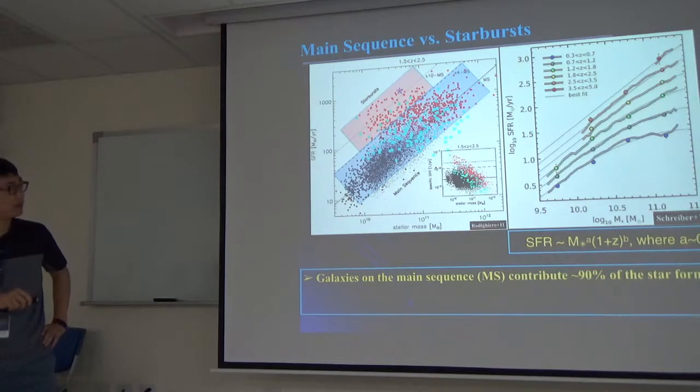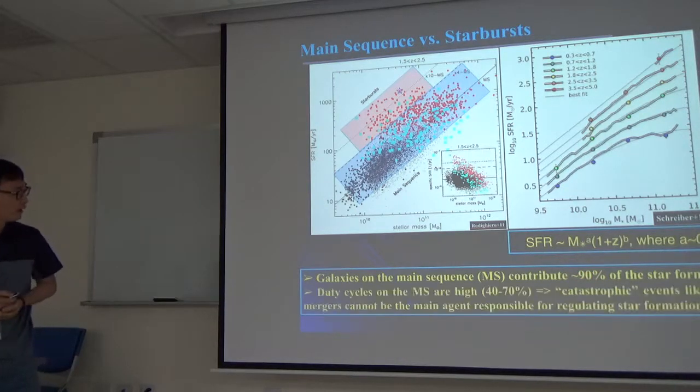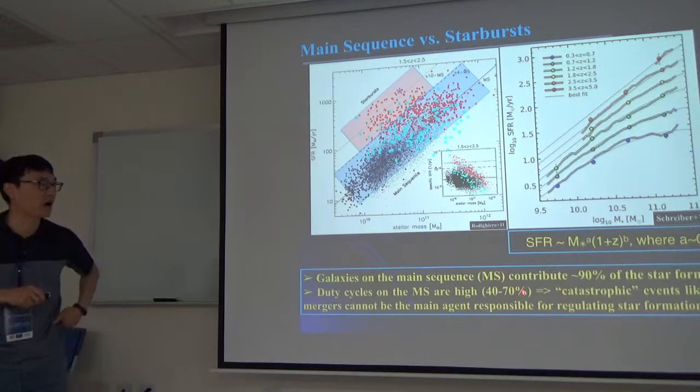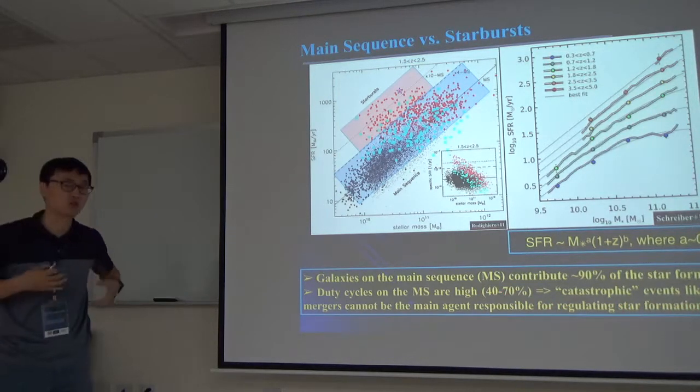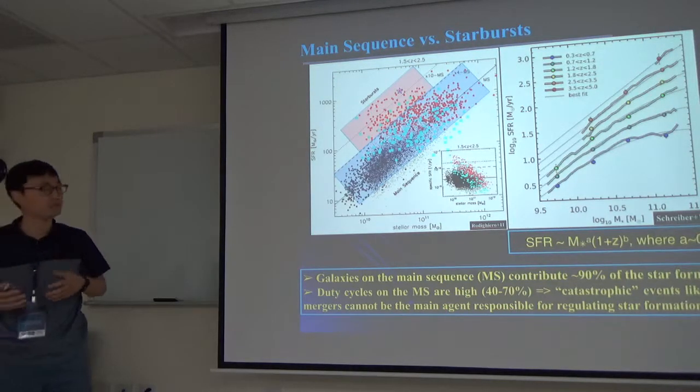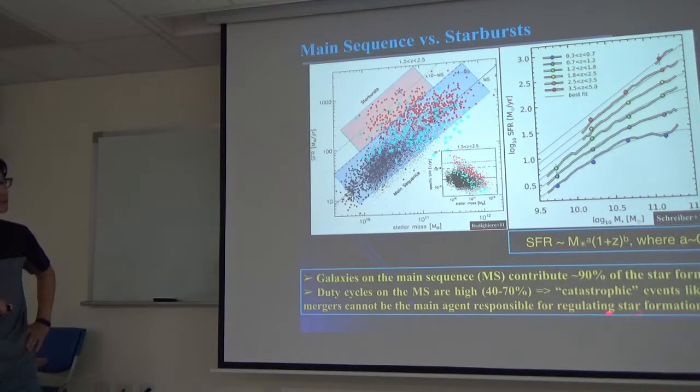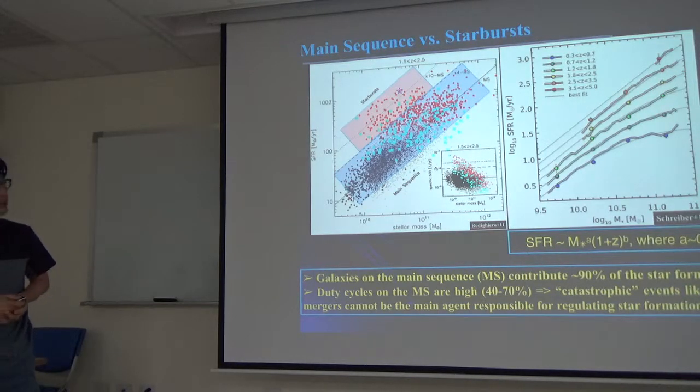The point is galaxies on the main sequence contribute 90% of star formation, which means the duty cycle of the main sequence are very high. Which means the catastrophic events like a major merger cannot be the main agent responsible for regulating star formation. This underscores the importance of the main sequence galaxies.